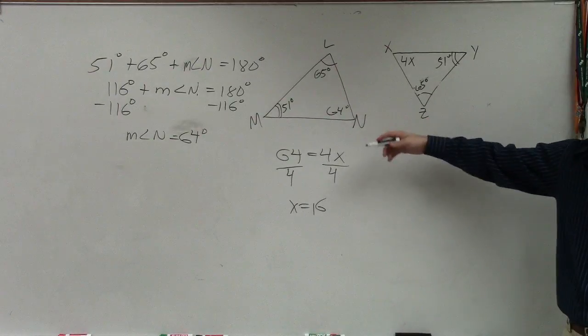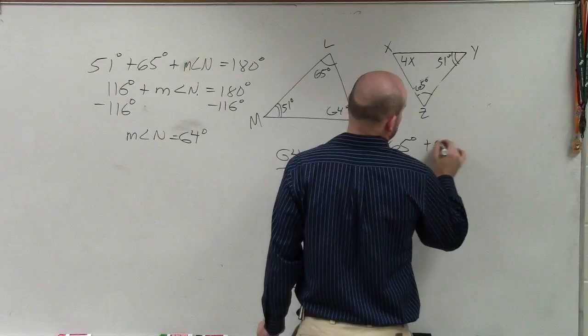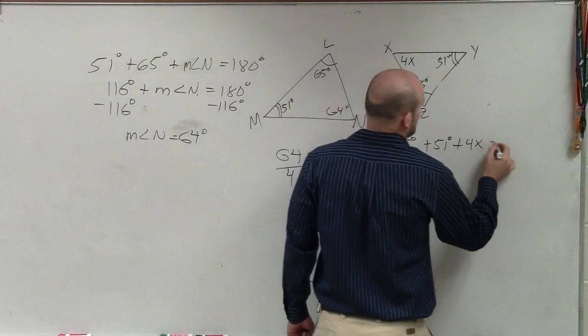So you could say 65 degrees plus 51 degrees plus 4x equals 180,